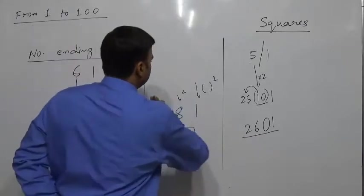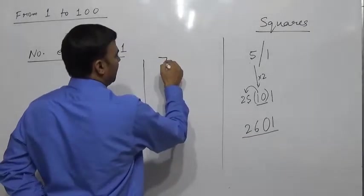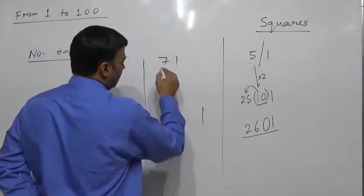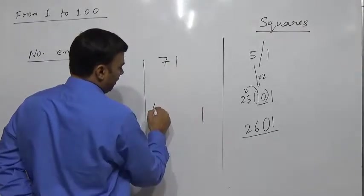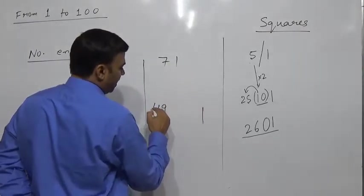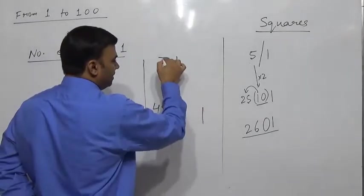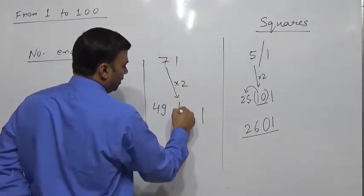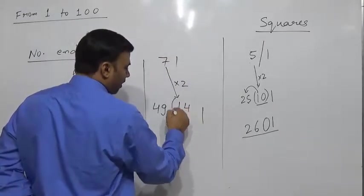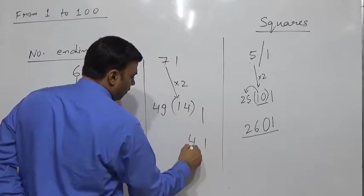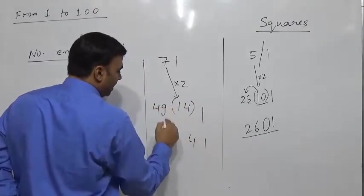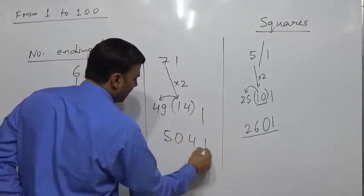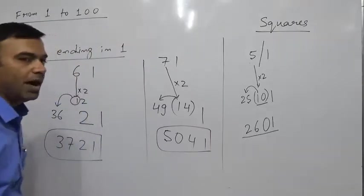Suppose we have 71. For 1 we have 1; for 7 we have 49; and 7 × 2 = 14. So 4 comes in the middle and 1 carries forward to 49, giving 50. The square of 71 is 5041.